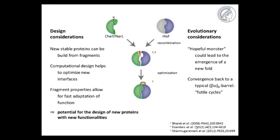We can also take some evolutionary considerations out of this experiment. We can look at our nine-stranded barrel as if it's a hopeful monster that could, in theory, lead to the emergence of new protein folds, which might actually have happened in the course of evolution, but we usually don't see these proteins because they will converge back to a typical beta-alpha-8 barrel fold because this might be more stable. And this we call a futile cycle.